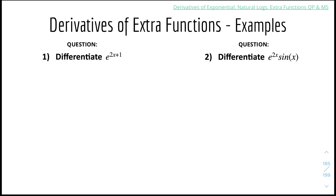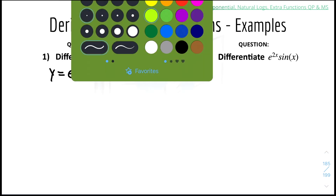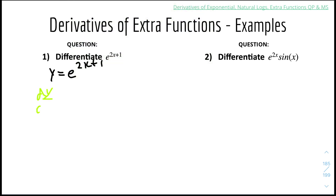Now some examples. Number 1: differentiate e to the power of 2x plus 1. So y equals e to the power of (2x + 1). dy/dx will be equal to the derivative of the power, which is 2. So we pull it down: 2e^(2x+1). It's quite simple.